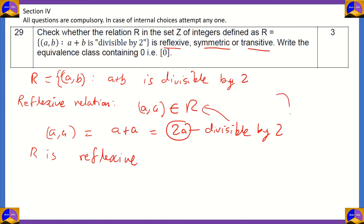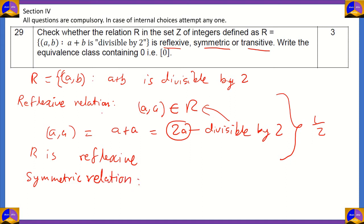Proving that R is reflexive will get you half marks. Now let's look at whether the relation is symmetric. Note that we're talking about relations here, not functions. A relation that is reflexive, symmetric, and transitive is called an equivalence relation. To prove that a relation is symmetric, you need to prove that if (a, b) belongs to R...